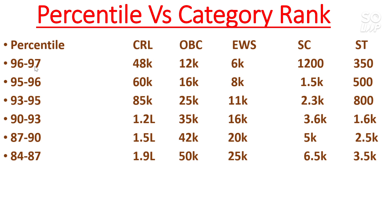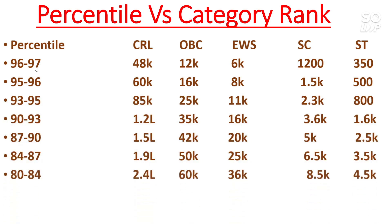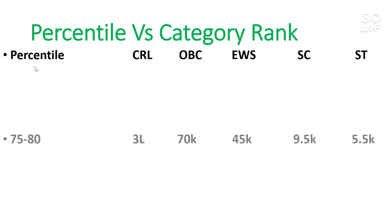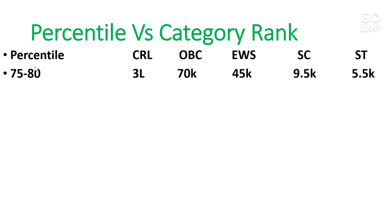I have already made a marks versus percentile video, shift-wise, for the February attempt. If you haven't appeared for February, watch that video to understand how much marks you need for the March or April attempt to achieve a target percentile. For 80 to 84 percentile, CRL will be under 2.4 lakh. For 75 to 80 percentile, CRL will be under 3 lakh.